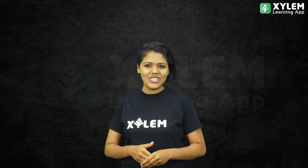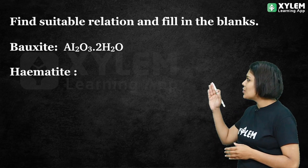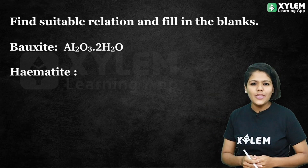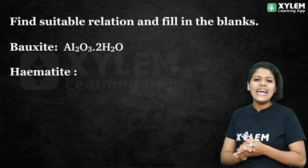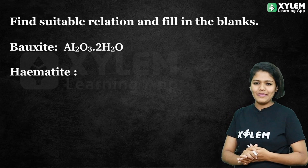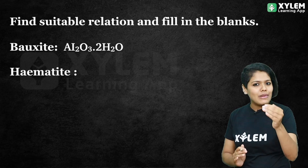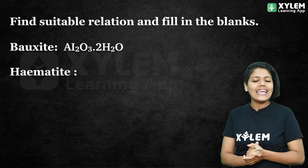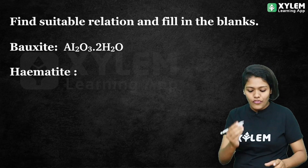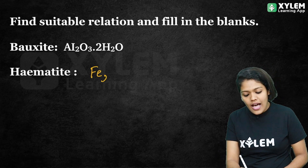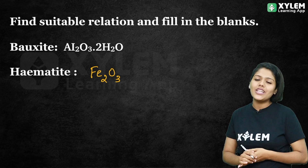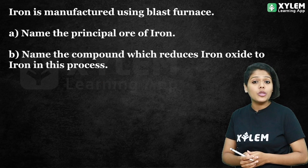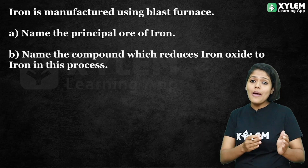We have a few questions about this content related to iron. Find the suitable relation and fill in the blanks. Bauxite is called aluminum, and the formula is Al2O3·2H2O. Hematite is called iron — it is the ore of iron — and the formula is Fe2O3. Iron is manufactured by using a blast furnace.